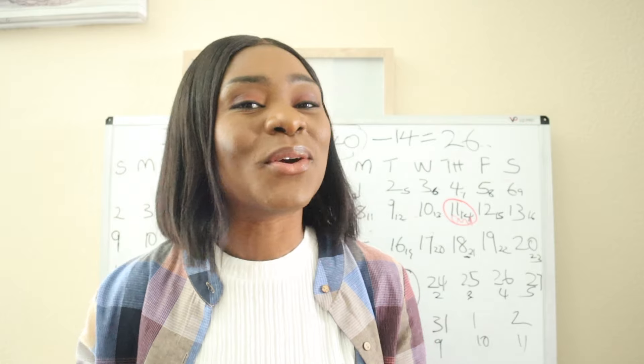On day 11, she's most likely to release an egg, and if that egg gets fertilized by sperm, she would get pregnant. However, day 11 is not the only day she could get pregnant — she can get pregnant before or after that day, because ovulation is not always consistent. Sometimes it can come a little early, sometimes a little late.